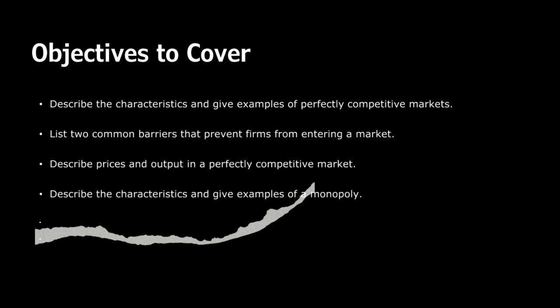Market power is another hallmark — monopolies have substantial market power, meaning they can set prices above marginal cost. This can lead to higher prices and reduced output compared to perfectly competitive markets. In contrast to perfectly competitive markets with perfect information, monopolies often benefit from information asymmetry, where they have more information than consumers.